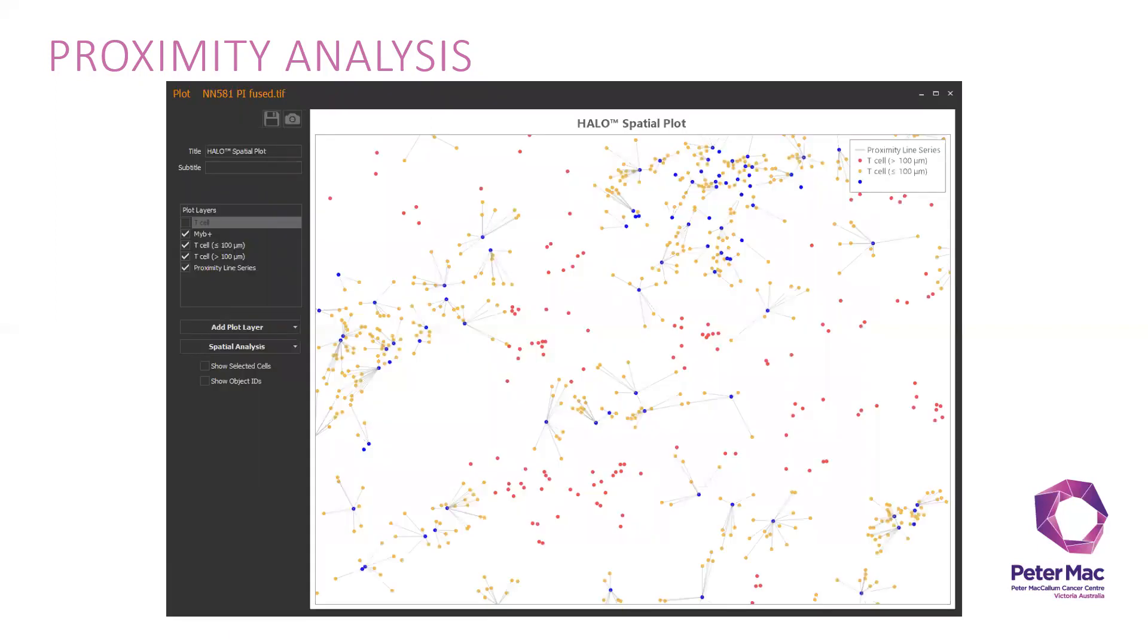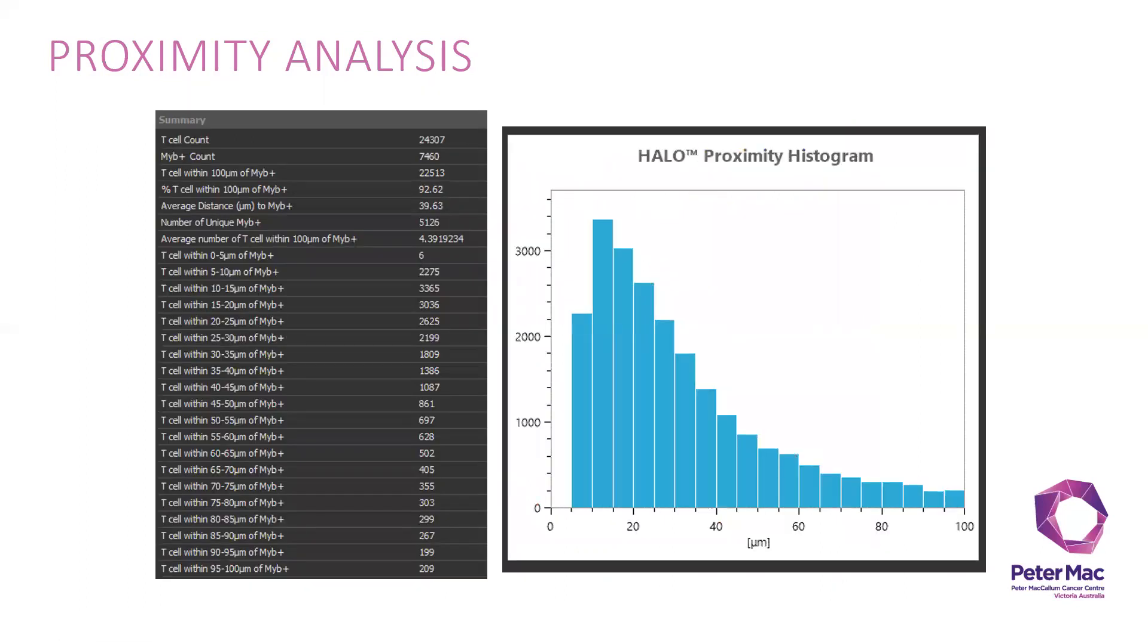This is the markup image of the plot, spatial plot. It will show you the T cells that are more than 100 microns outside the range and then inside the range. It will give you this histogram plot. You can see the further it is from the MIB, the lesser the number of cells.